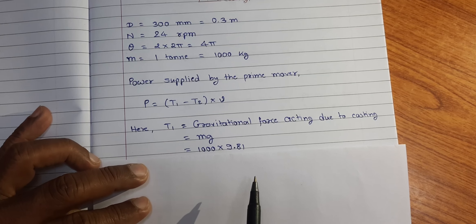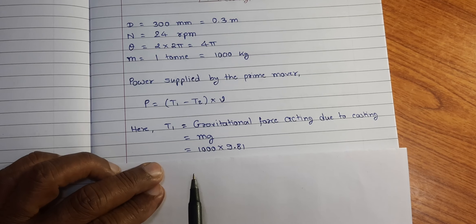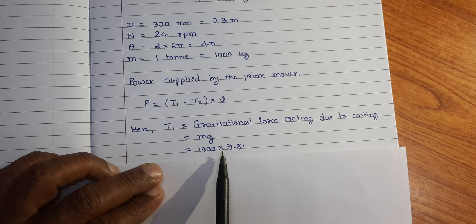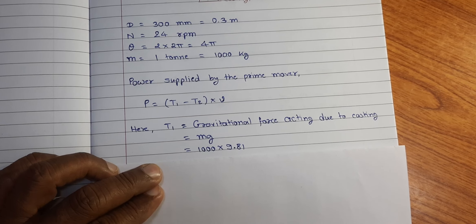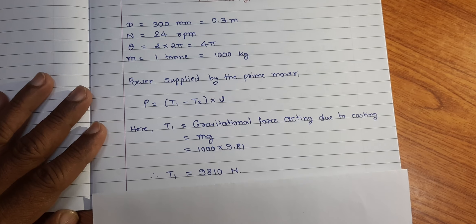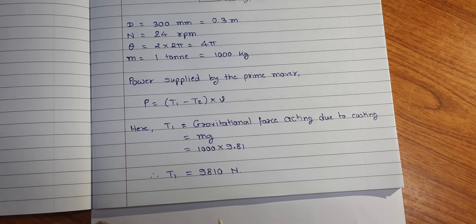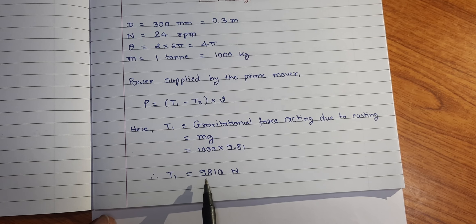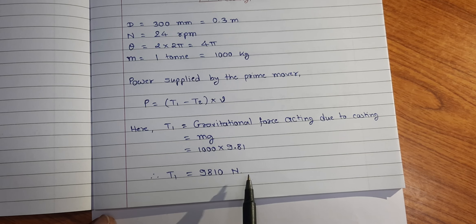Substituting the values we found T1 is equal to 1000 into 9.81 and on calculation we find T1 is equal to 9810 N.